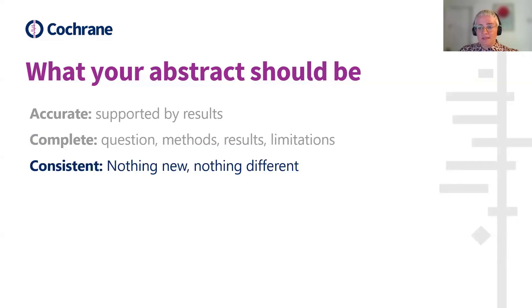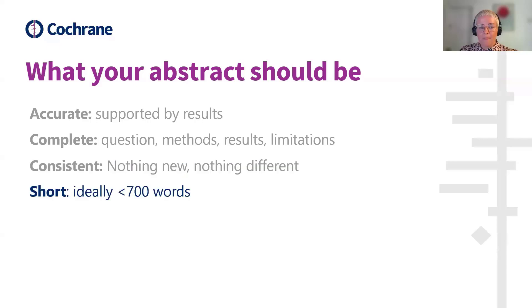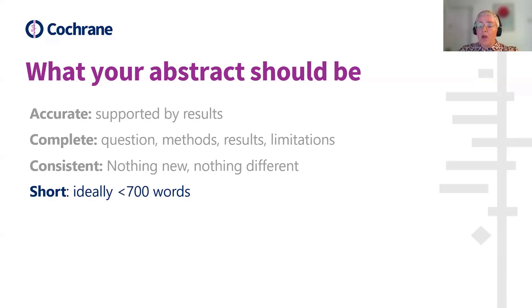An abstract should be consistent — it should not contain any information that is not in the main body of the review, and the overall messages should be consistent with the conclusions of the review. And finally, an abstract should be short — it shouldn't be more than a thousand words. This is due to the fact that PubMed will only display the first thousand words of an abstract. Although in the interest of brevity, authors should aim to include no more than 700 words without sacrificing important content.